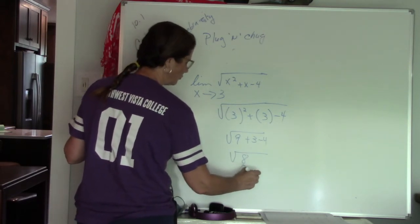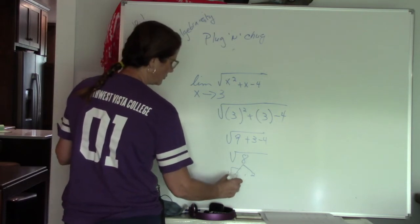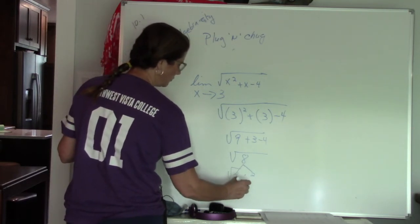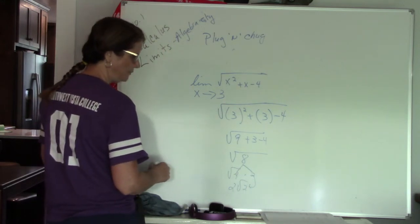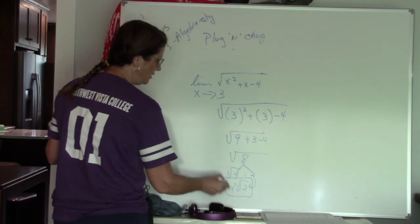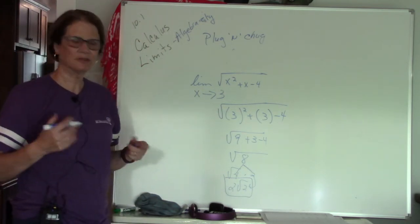So 8 can be broken down into 4 times 2. So square root of 4 is 2. And then square root of 2 stays underneath. So this one stays underneath. This one is my whole number. So this is the limit. Plugged in the value, chugged out the answer. Simple as that.